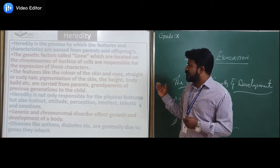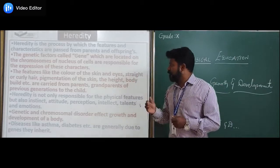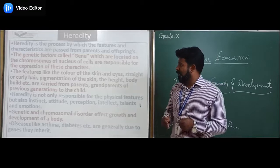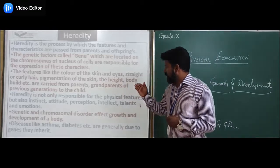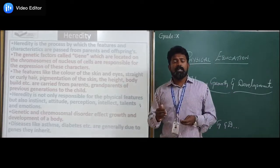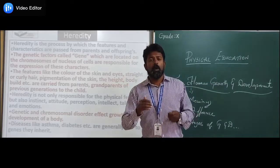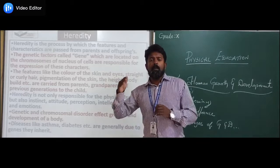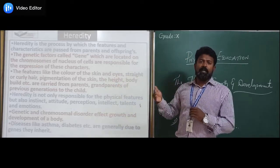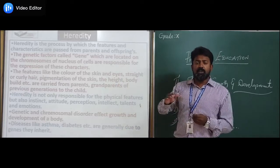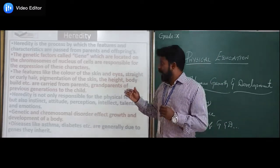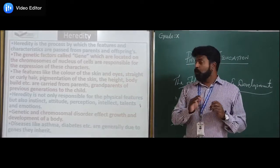Features like the color of the skin and eyes, straightness or curviness of hair, pigmentation of the skin, height, and body build are characteristics passed from parents and grandparents of previous generations to the child. These are the physical features being transferred from parents and grandparents to offspring.